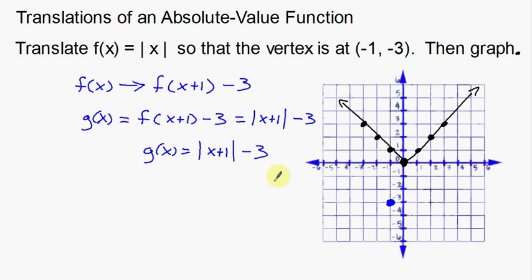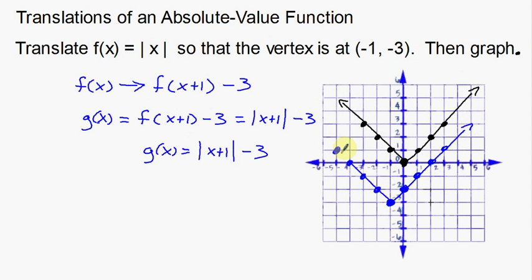Now let's graph this. All these points are going to be in relatively the same position — we're just moving everything left 1 and down 3. So all of my points shift: each one goes left 1, down 3. Every single point does that — left 1, down 3 — and now I have my new g of x function. This one here is g, and this right here is my f function. Now I can see the difference between my f function and my g function.